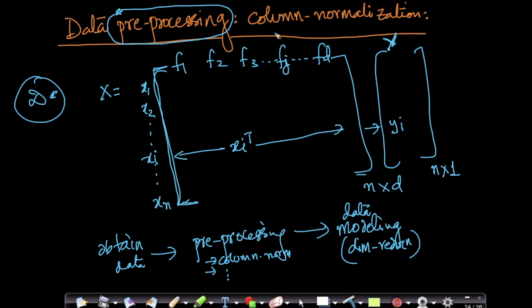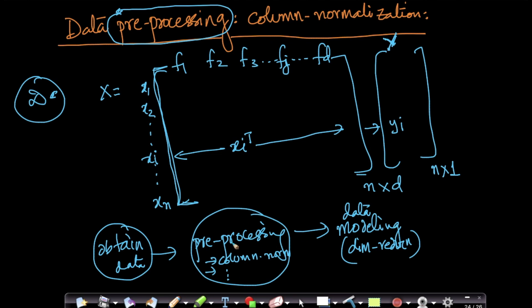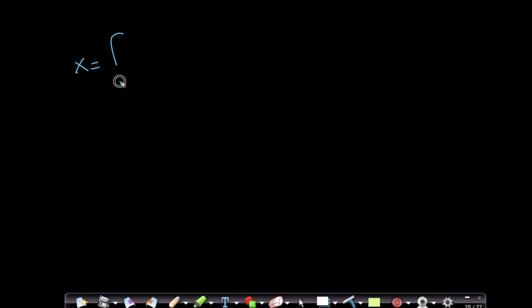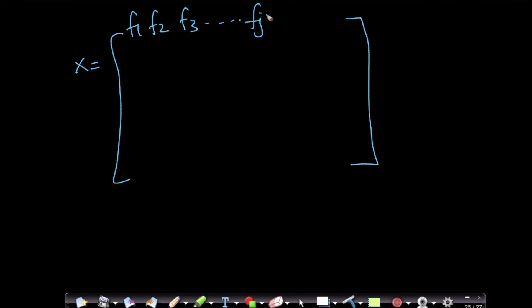One such operation is called column normalization. You obtain your data, you pre-process your data before you go and do data modeling, so that your data is neatly processed in such a way that the data modeling algorithms can perform well. I have my features as columns f1, f2, f3, so on, feature j, and I have n data points — an n cross d matrix.